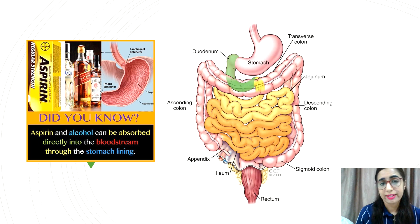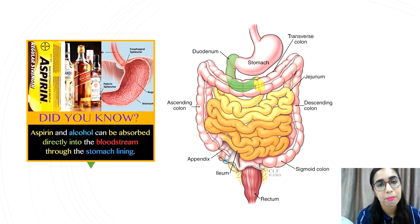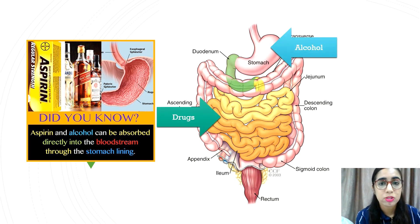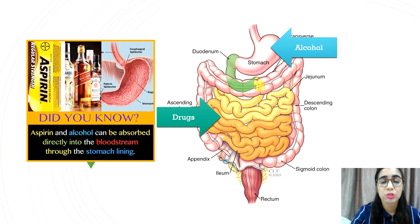Did you know that aspirin and alcohol can be absorbed directly into the bloodstream through the stomach lining? Most drugs are absorbed in the small intestine because of its large surface area and more permeable membrane compared to the stomach. When food is present in the stomach, alcohol is trapped for digestion before moving into the small intestine, causing less alcohol to be absorbed. On an empty stomach, alcohol moves directly into the small intestine for fast absorption.